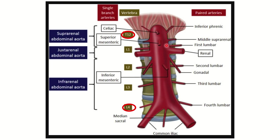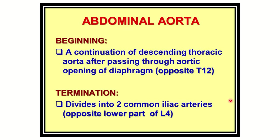Some branches are anterior, some are posterior, some are lateral, and some are terminal. The three important anterior branches are the celiac trunk, the superior mesenteric artery, and the inferior mesenteric artery. The two important terminal branches are the right and left common iliac arteries. There are also lateral and posterior branches.